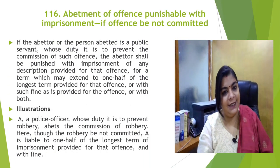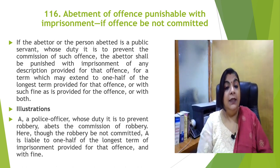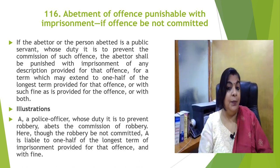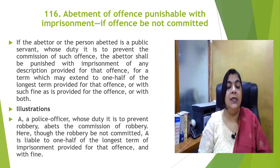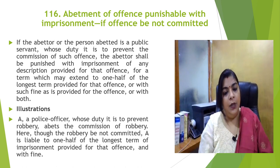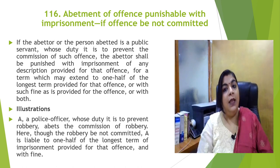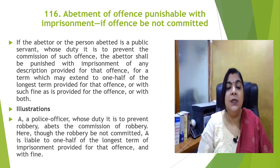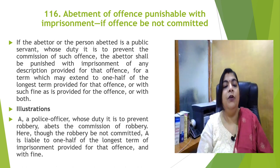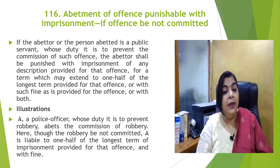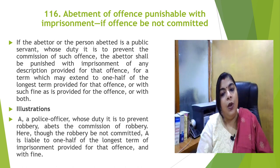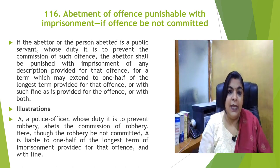The second part of Section 116 is related to the public servant. If the abettor is a public servant whose duty is to prevent the offense, and that public servant is abetting any other person to commit a crime, then even if that crime is not committed, the public servant is liable for one half of the punishment prescribed under IPC for that offense. For example, if a police officer whose duty is to prevent robbery abets a commission of robbery, though the robbery is not committed, the police officer is liable to one half of the longest term of imprisonment provided for the offense and also a fine.